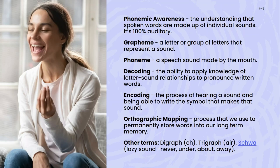Orthographic mapping is a term I hadn't heard when I was in the classroom, but I've learnt it through watching teachers on Instagram and chatting to experts. Tam will touch on it in the tricky words section, but it's basically the process we use to permanently store words into our long-term memory. This is why there's been a shift away from learning words as whole sight words — and why I can now read words automatically without decoding every single one.